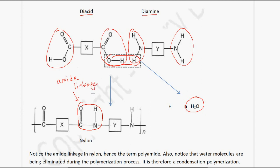You have to be able to show how the diacid and diamine react to give us nylon. Note that sometimes you may see the amide linkage drawn in a different orientation — it represents the same structure.